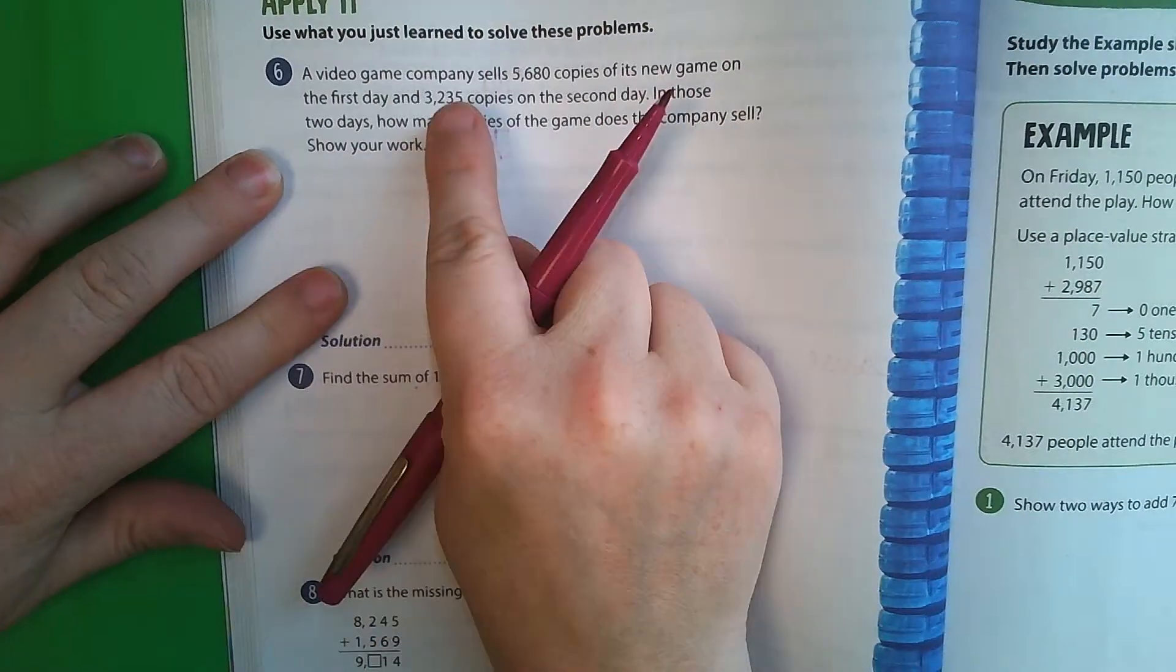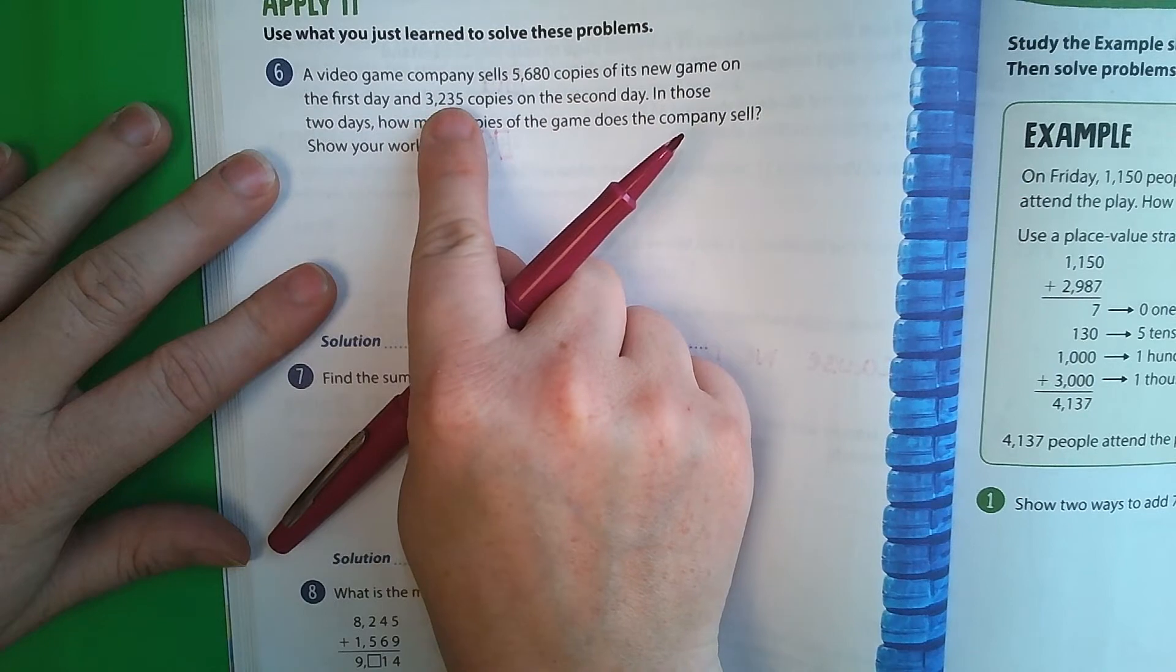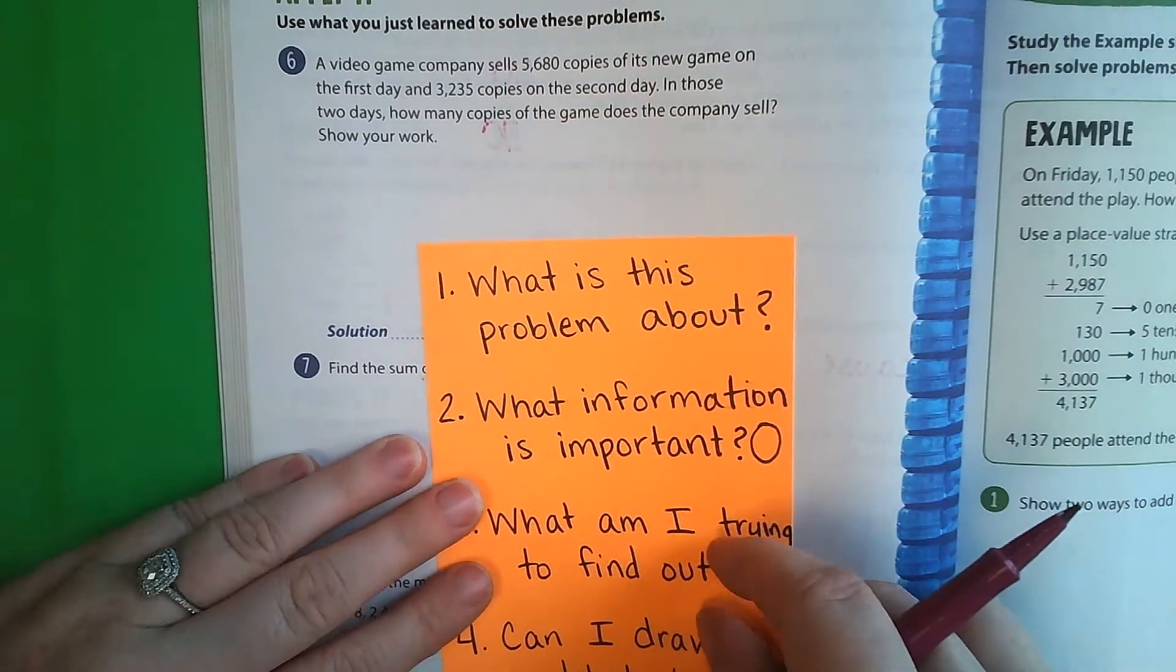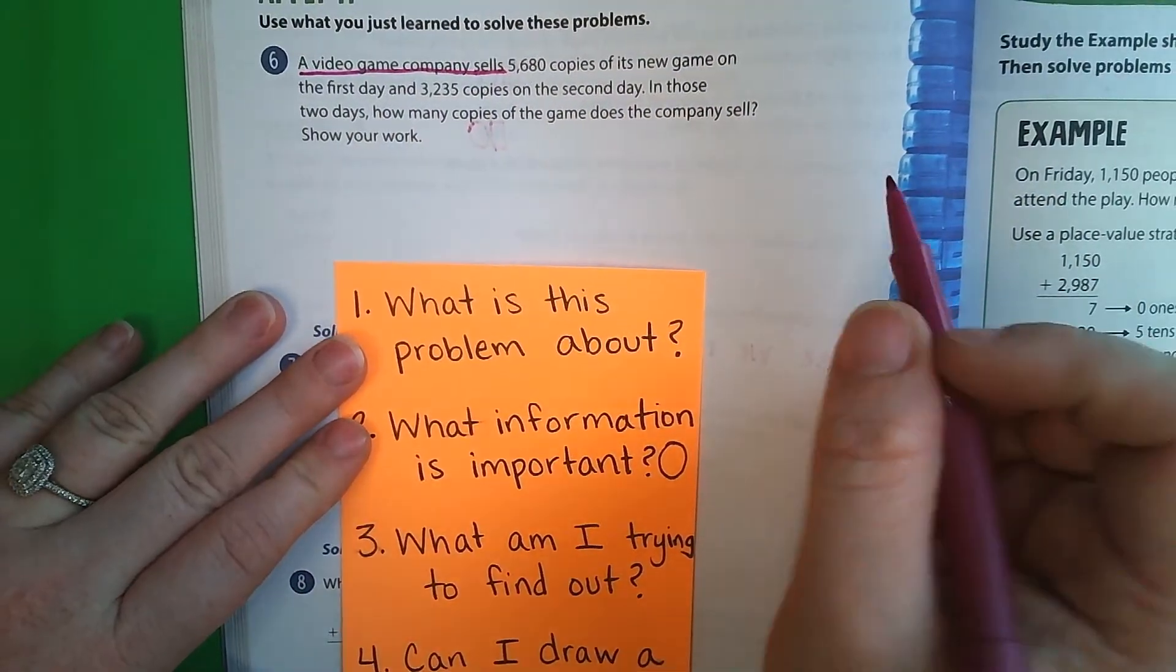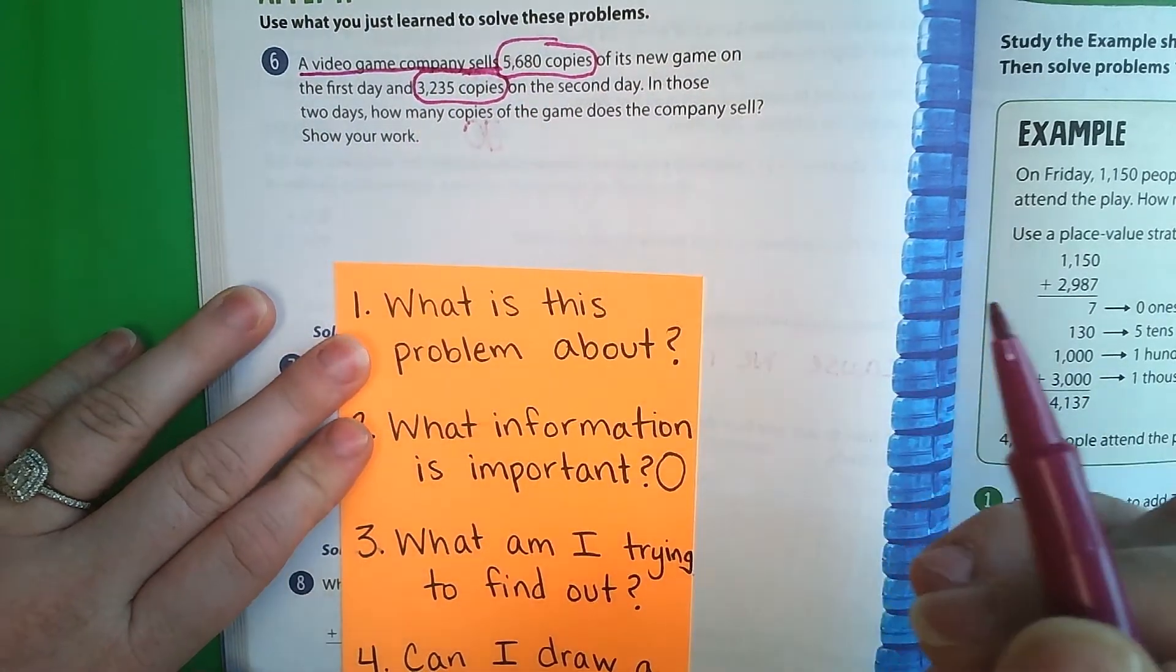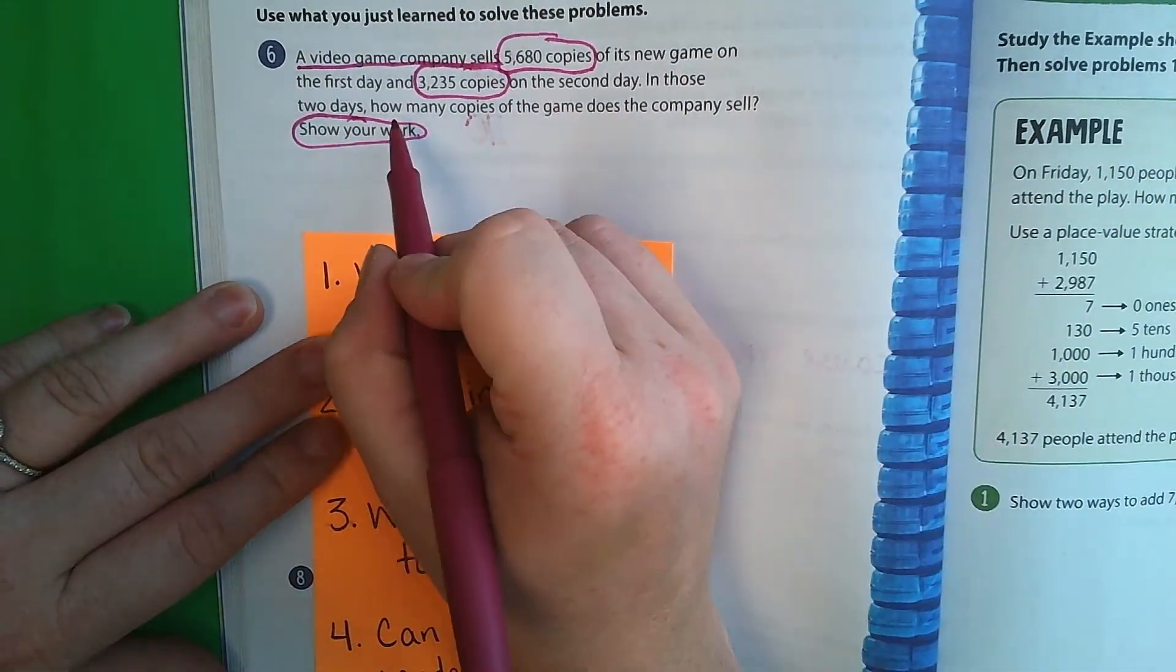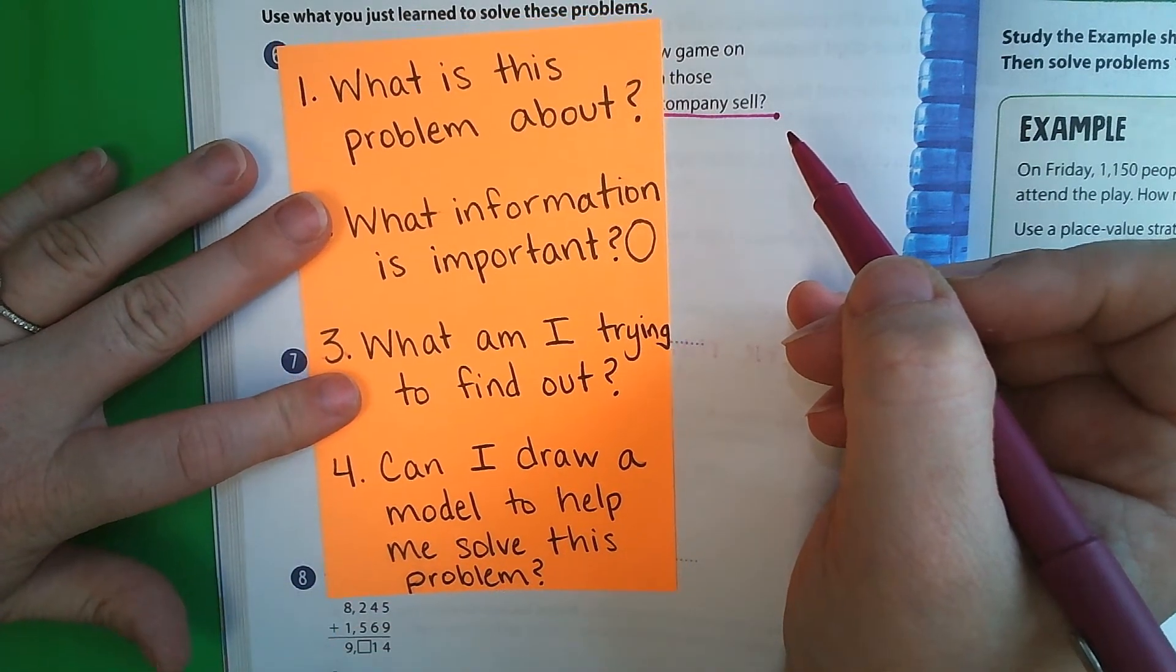Okay, let's turn to page 56. On page 56, a video game company sells 5,680 copies of its new game on the first day and 3,235 copies on the second day. In those two days, how many copies of the game does the company sell? Show your work. Okay, so let me get our note card here. What is this problem about? Well, it's about how many video games a video game company is selling. What information is important? 5,680 copies is important and 3,235 copies is important. Also, in those two days, how many copies does it show your work is important? Okay, what am I trying to find out? I'm trying to find out how many copies of the game the company sells and can I draw a model to help me solve this problem? Yes, I can.